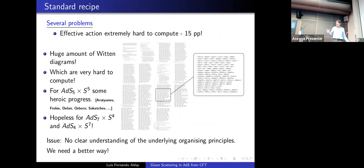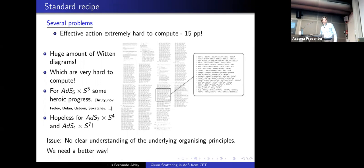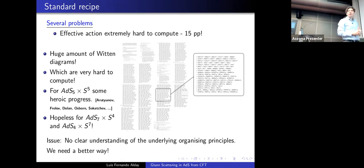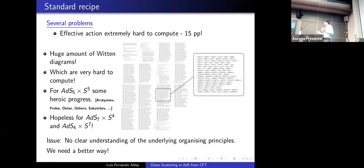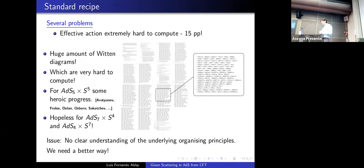Actually this is not the best idea and there are a few obstacles. First, the effective action is extremely hard to compute — even for AdS5 × S5, the action takes 15 pages. Then if you start writing down Witten diagrams, you have a huge number: given k1, k2, k3, k4, the diagrams grow like the product of all these numbers. For k=20 it is super difficult, and even the diagrams you do have are extremely hard to compute.